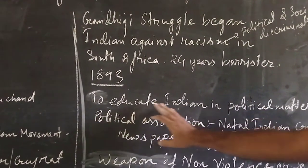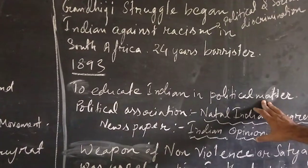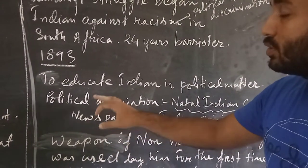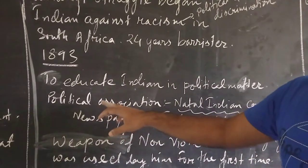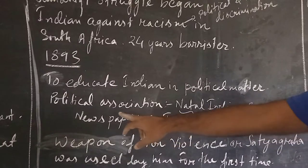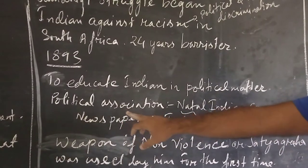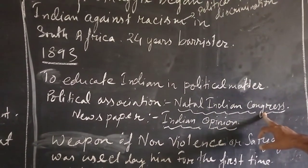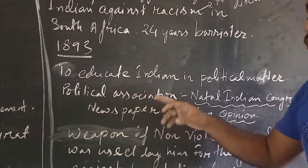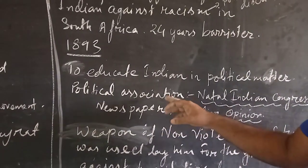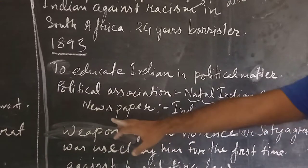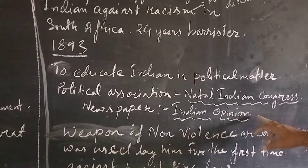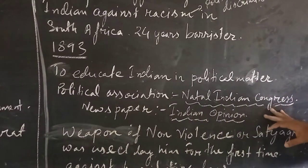He had to educate Indians on political matters. He founded a political association because he came to know it was of the utmost importance to make the people of India politically sound. The name of the political association was Natal Indian Congress, founded by Mahatma Gandhi to make people aware of politics. Second, he founded a newspaper called Indian Opinion to make people of India politically aware.